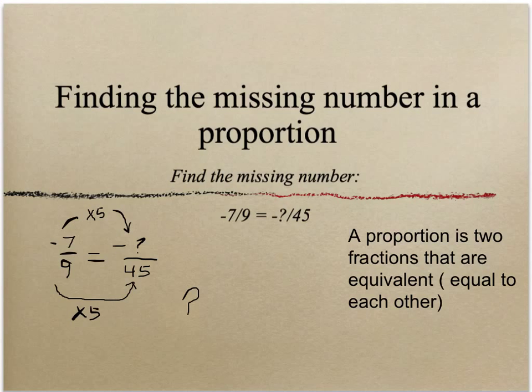So the missing number is equal to 35. So the answer would be negative 7 ninths is equal to negative 35 over 45.